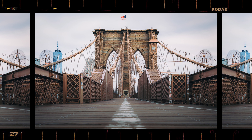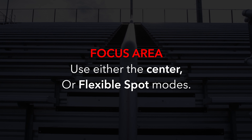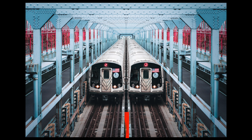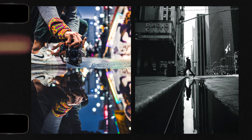Composition trick number two is symmetry. Symmetry is one of those things that just looks good and it's fairly easy to capture once you come across it. Symmetry can be created with lines, shapes, or even reflections. When shooting symmetry I recommend using either the center or flexible spot focus modes because this will assist you in lining up your shots perfectly. Remember — we want to ensure that all sides of our image are balanced, so that if we cut the photo directly across the middle, both sides look the same.